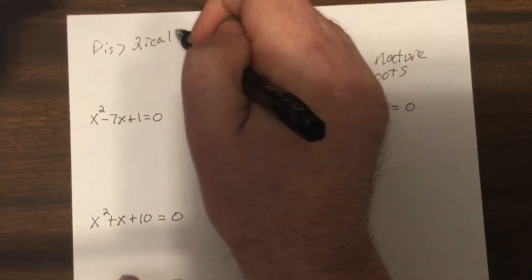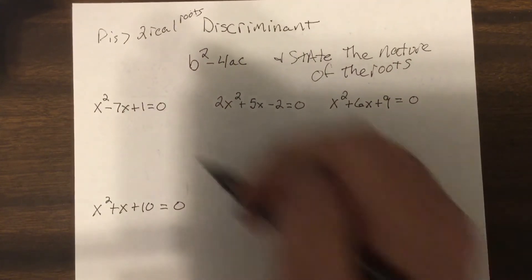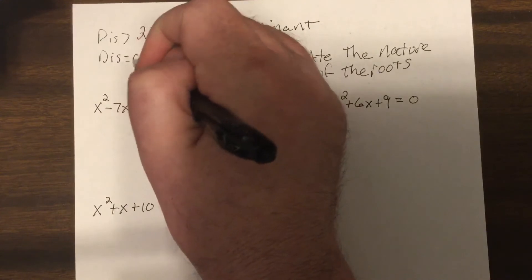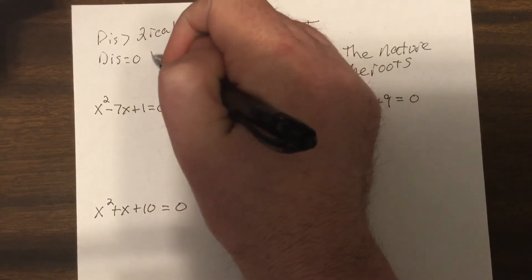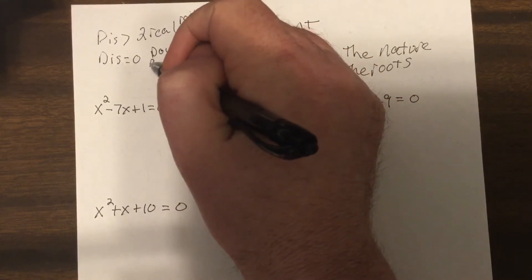Root just means answer. They also sometimes call them zeros. If the discriminant is equal to zero, then it's a double rational root, meaning it can be written as a fraction.